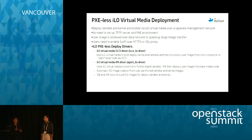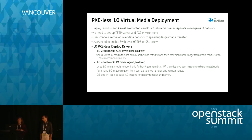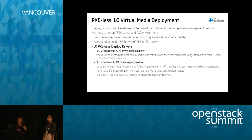There are two kinds of iLO virtual media drivers. The iLO virtual media iSCSI driver uses virtual media to load the ironic deploy kernel and RAM disk, then uses iSCSI to provision the user image from conductor to the bare metal node. The iLO virtual media IPA driver uses iLO virtual media to pull up the IPA RAM disk, and IPA takes over to deploy the user image. Users don't need to prepare different user images — they can use the partition image used by the PXE driver. The iLO virtual media driver automatically creates an ISO image from partition images.